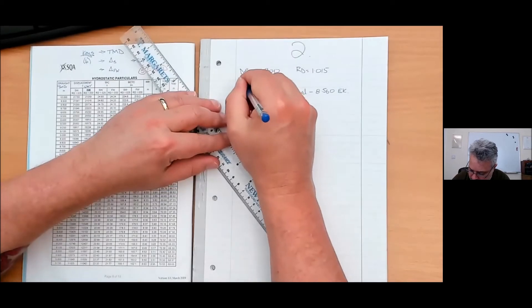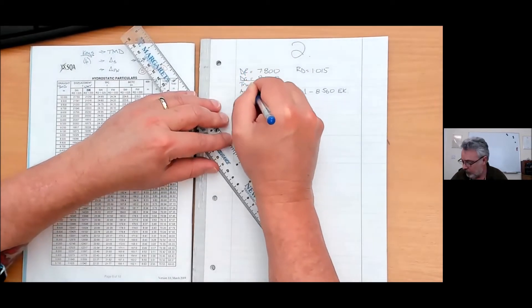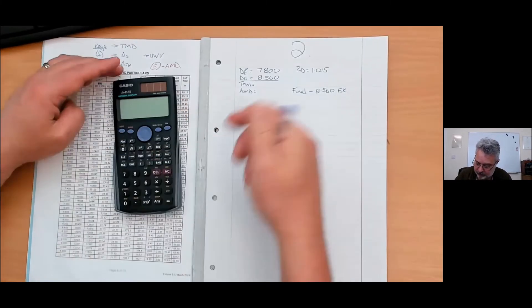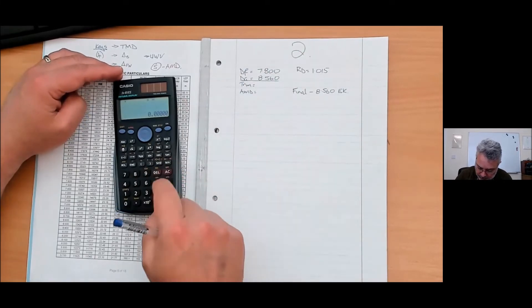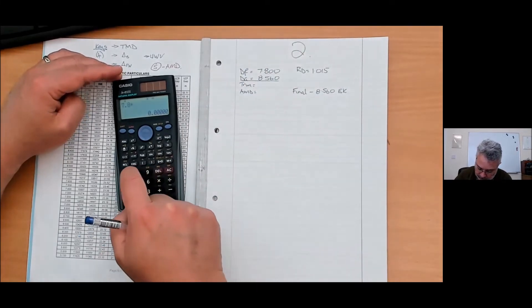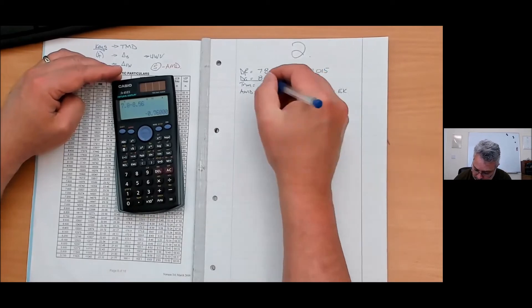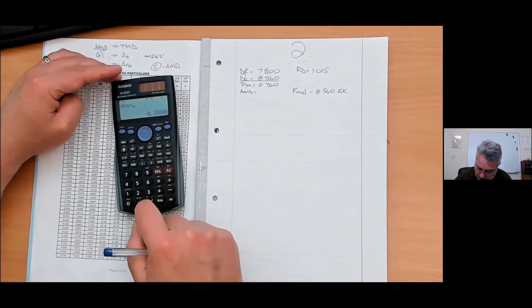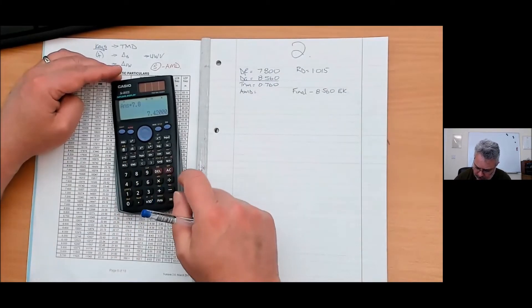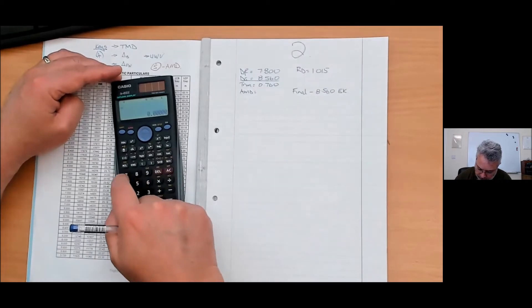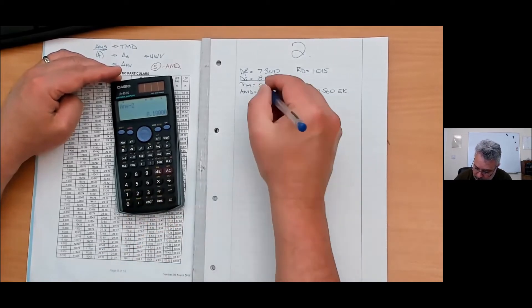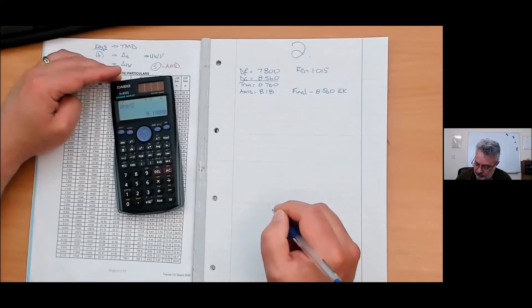Final is 8.560 even keel. Now those two drafts, what I'm going to be doing is I'm going to get trim and I'm going to get AMD. You don't have to do it this way. Do it whichever way suits you. So 7.8 minus 8.56, trim by 0.760. Divide by two, add it to the lower number. Actually, 7.8 plus 8.56 divided by two. That looks a lot more sensible.